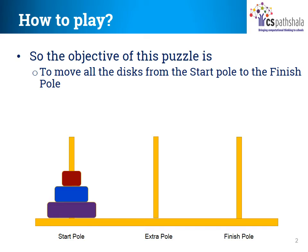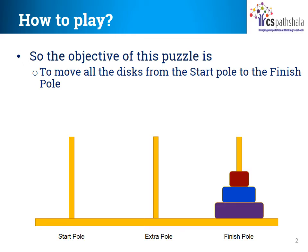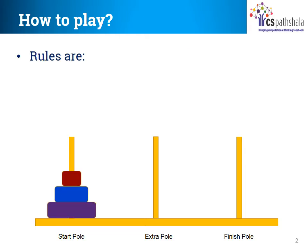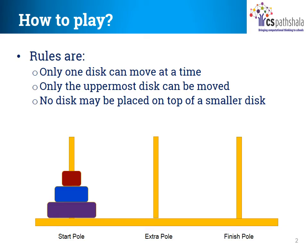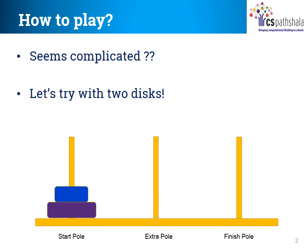So now that you know what the puzzle is made of, let's try and understand the puzzle. You have to move all the round discs from the start pole to the finish pole. But there are 3 rules that you have to follow. Rule 1: only one disc can be moved at a time. Rule 2: only the uppermost disc can be moved. Rule 3: no disc may be placed on top of a smaller disc.